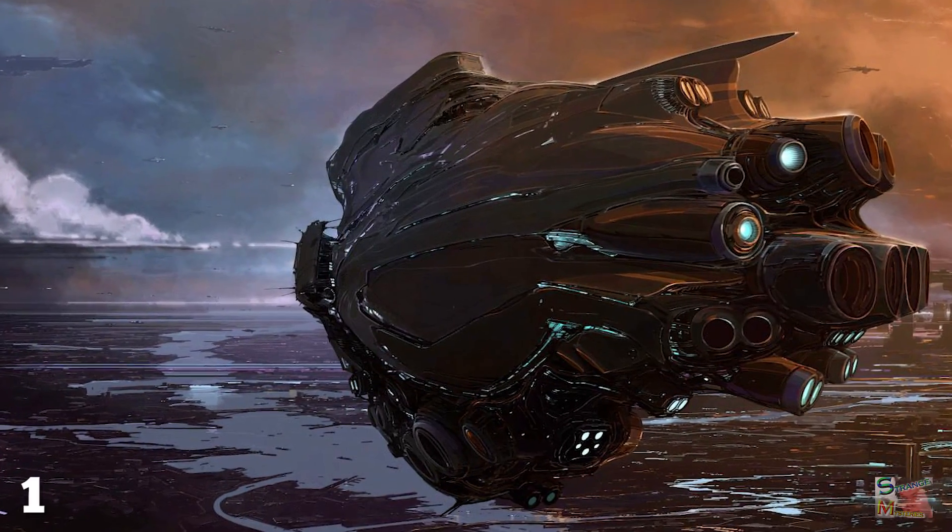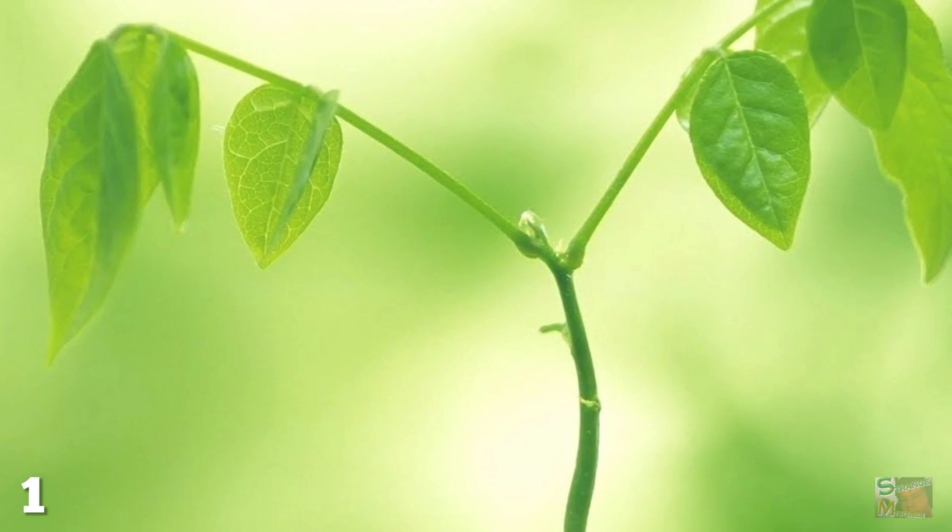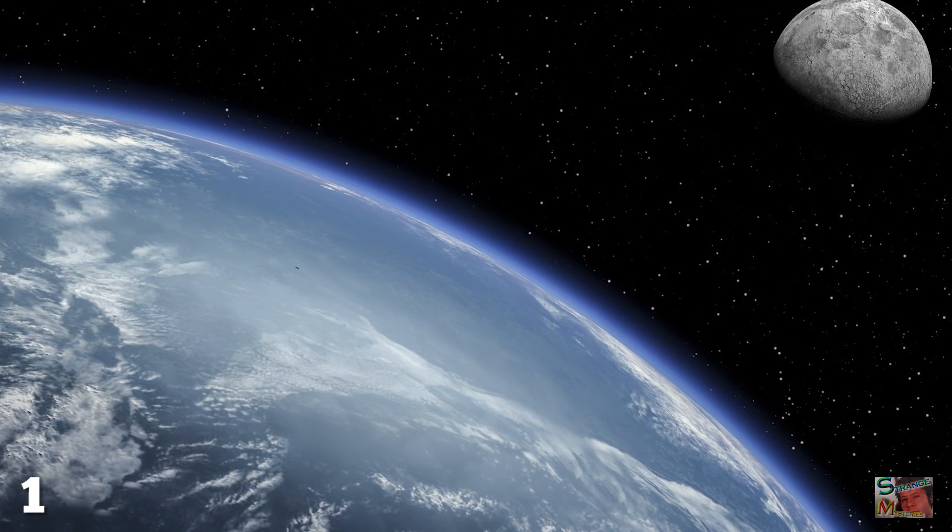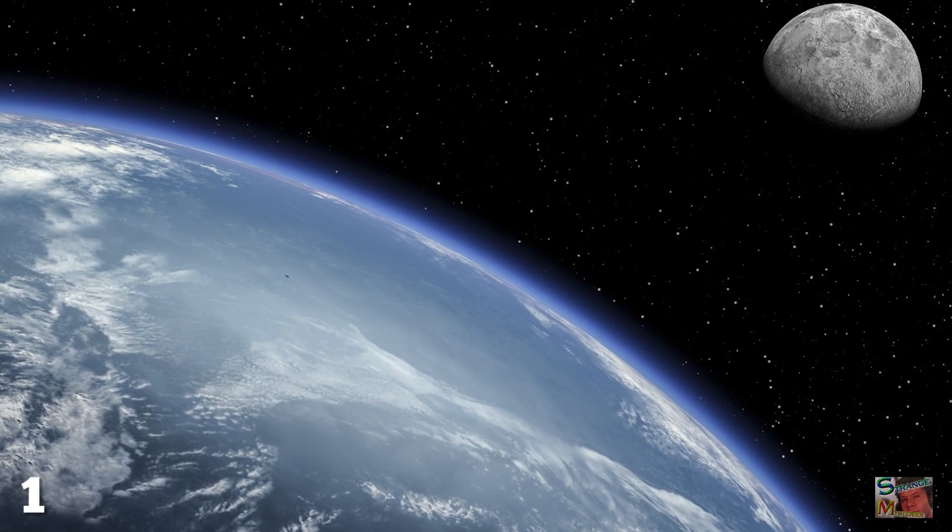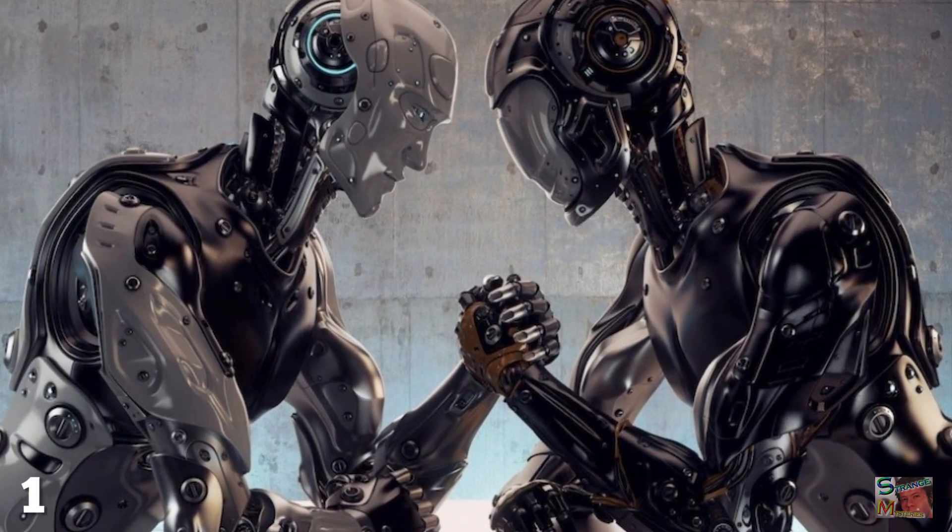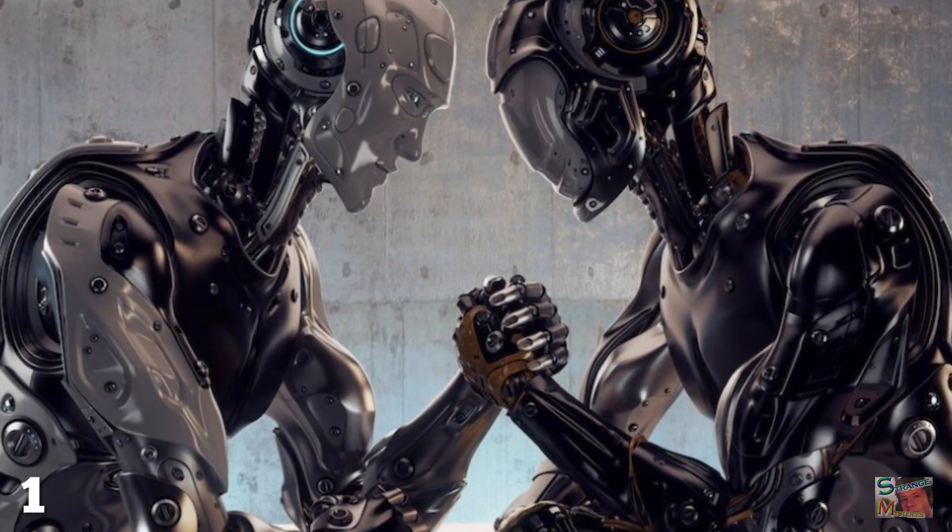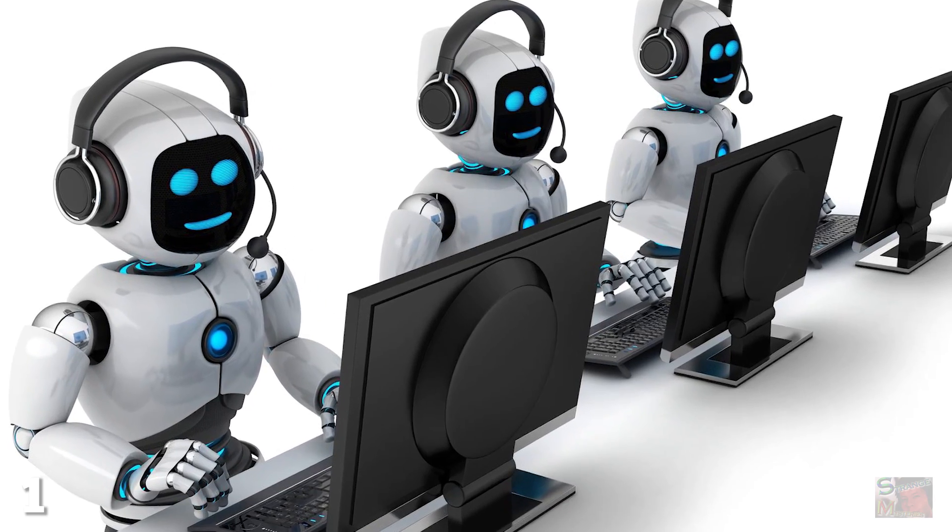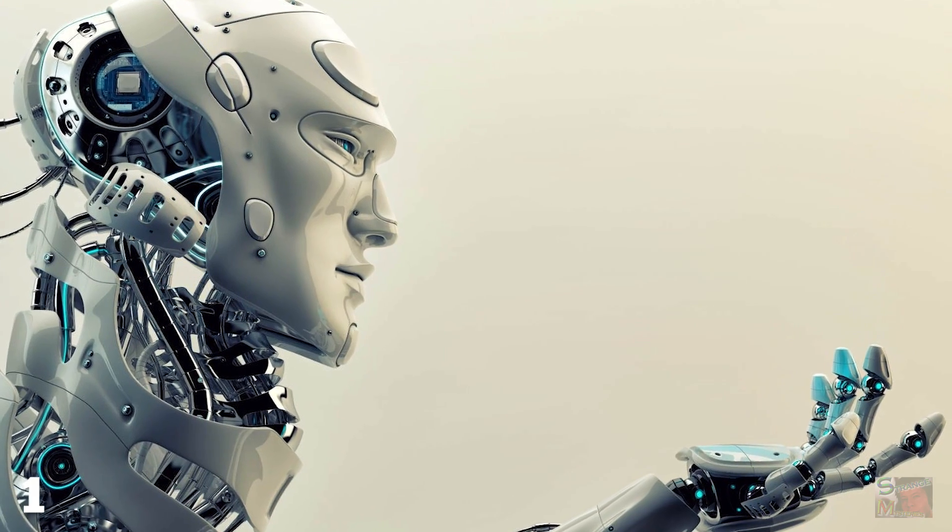It is even thought possible that an alien von Neumann probe could have kicked off life on Earth, with its remnants still left over on our planet or the moon. But a more important question concerns the nature of these robots: are they a civilization's tool or their successors?